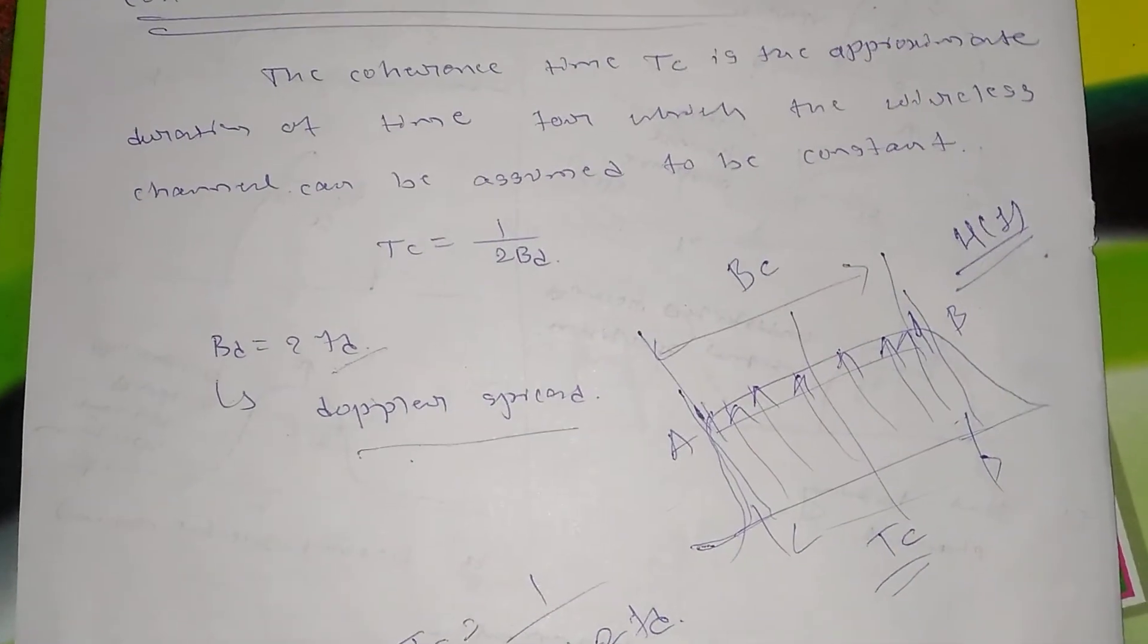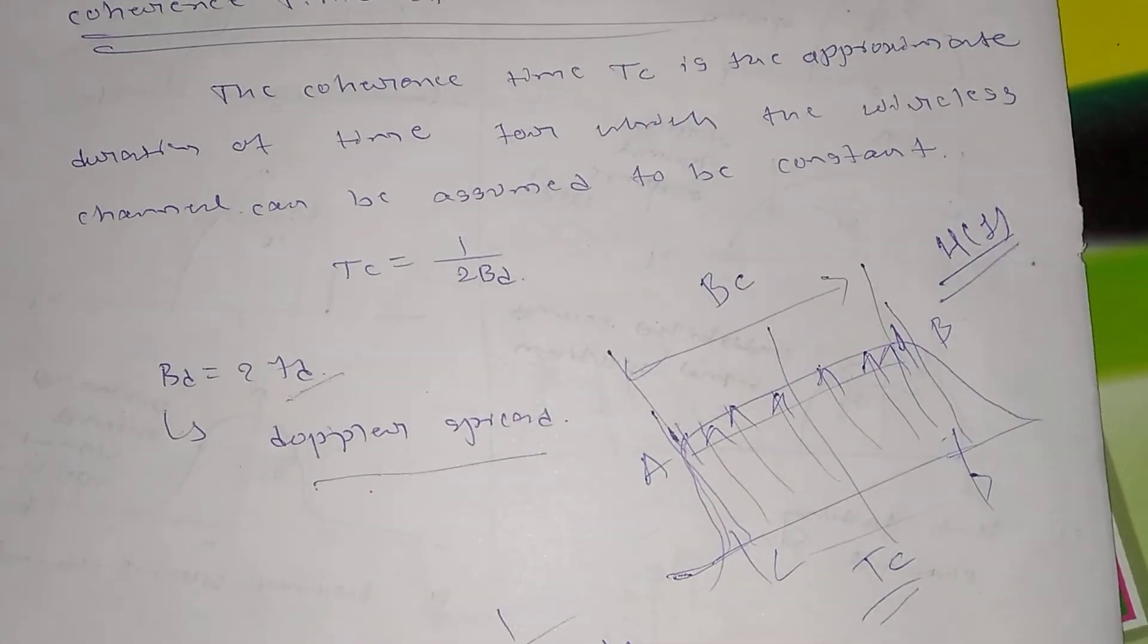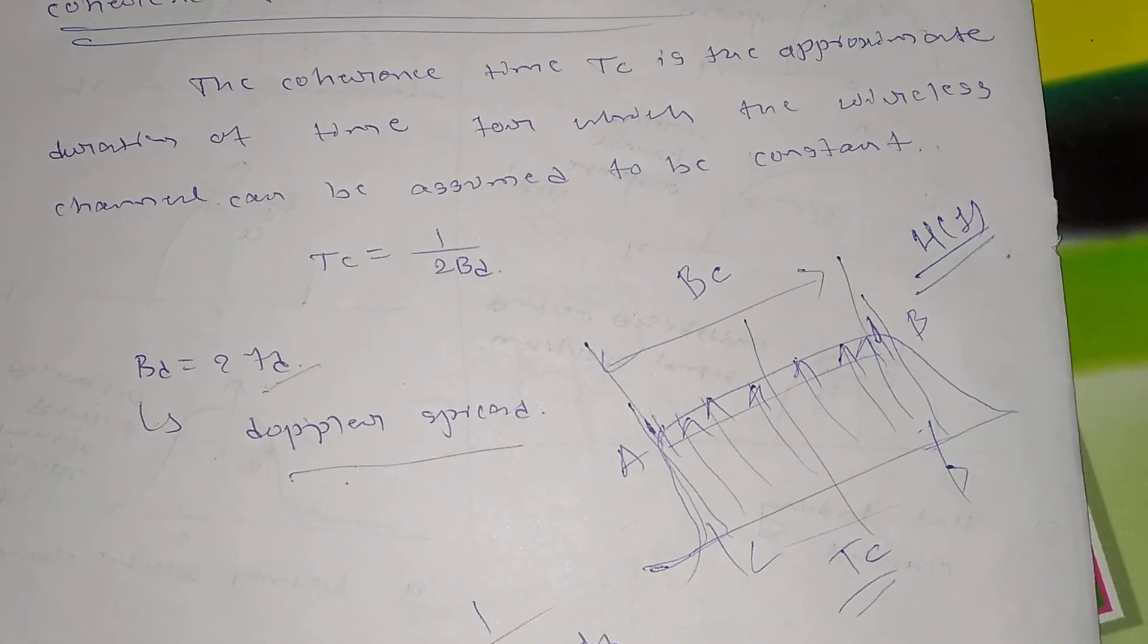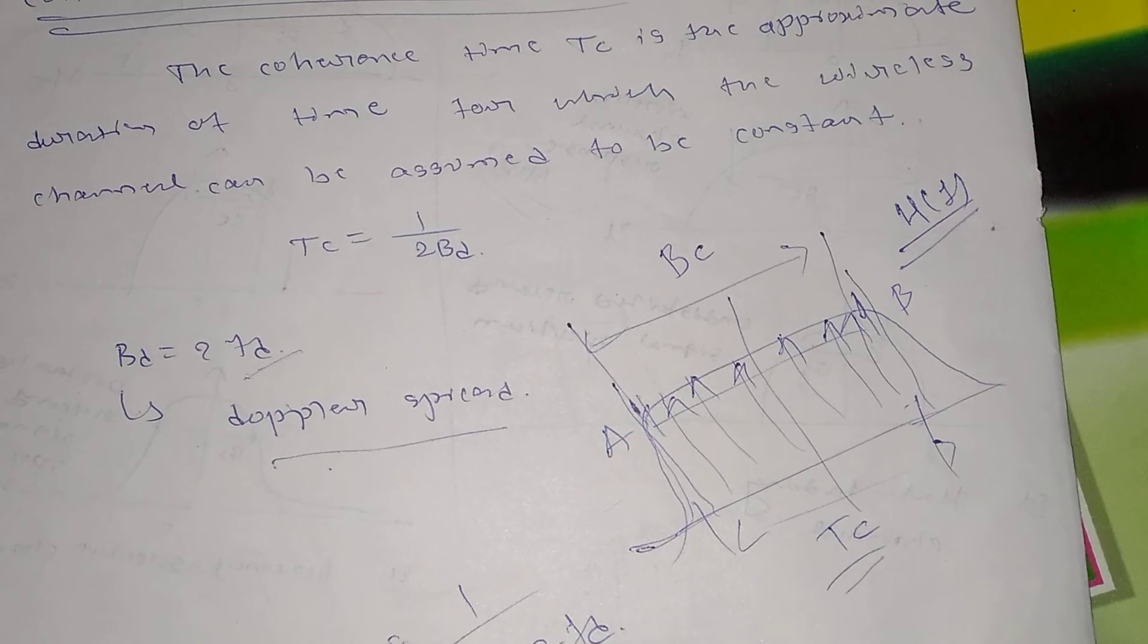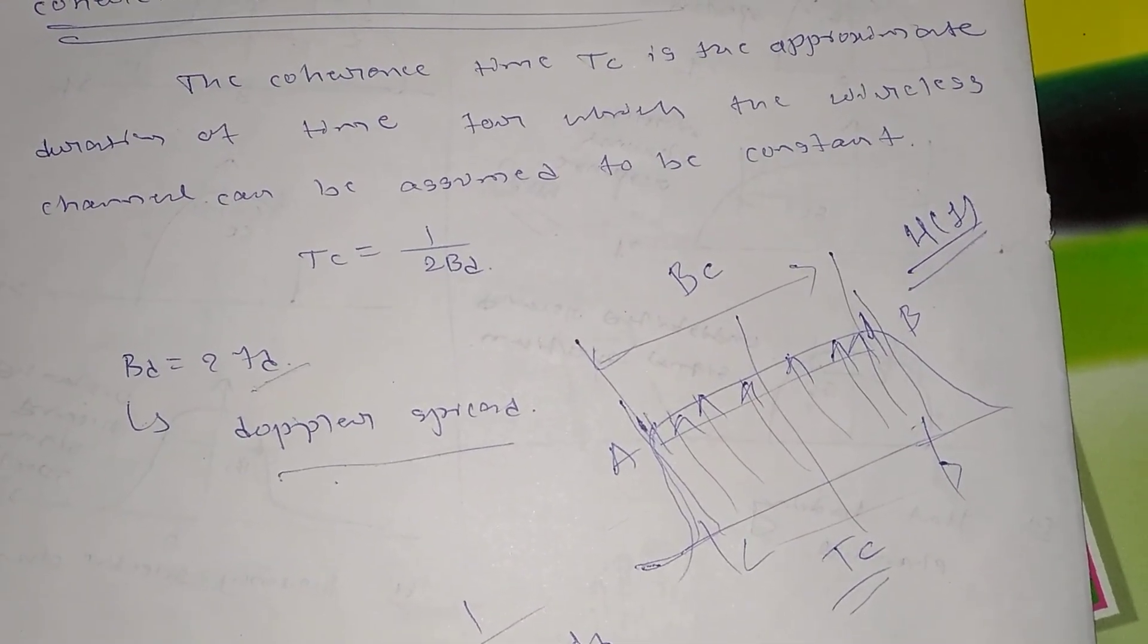So this is all about a short note on the coherence time of a wireless channel. Hope you have got an idea how to explain the things and how to write in exams. Obviously, so if you are having any doubt in this one you can just ask in the comment box.